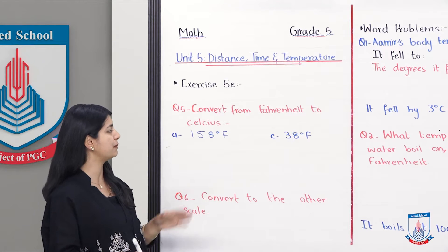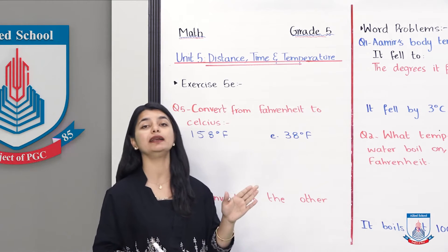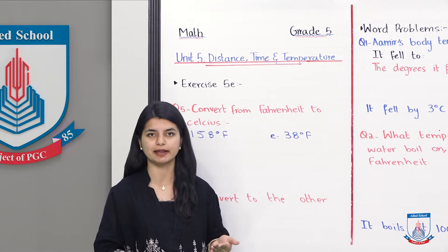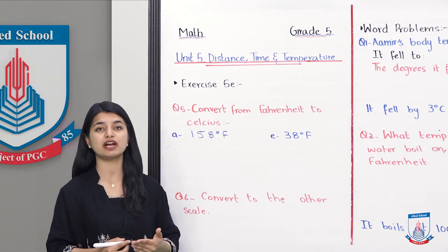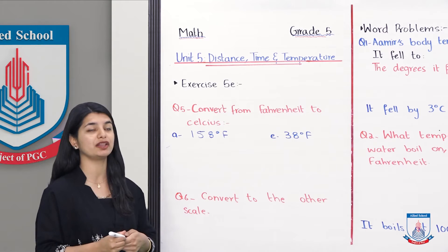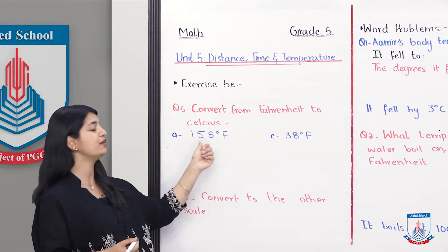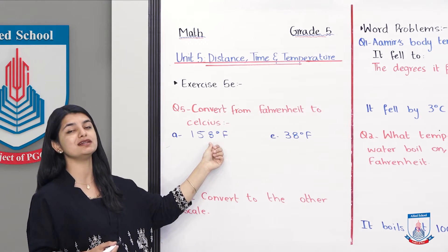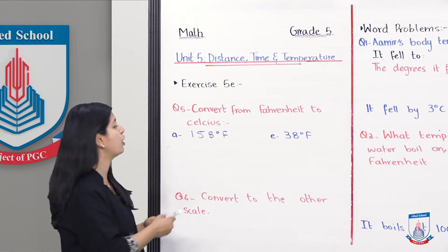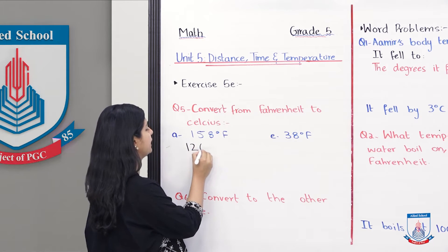In this part you have to convert 158 degree Fahrenheit to Celsius. So what do we do when we go to Fahrenheit from Celsius? First you subtract 32. So when you minus 32 from 158, then what will you have? 126.